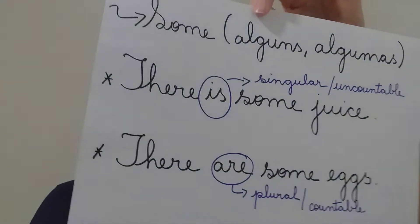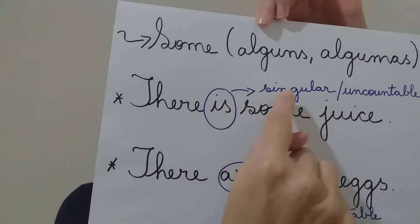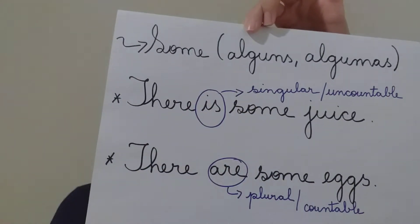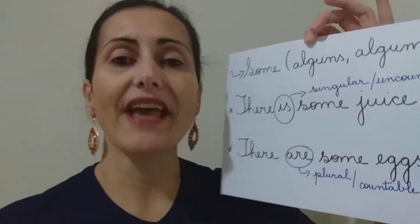Some — alguns, algumas. There is some juice, ok? Singular — verbo to be 'is', singular. Uncountable. Uncountable é quando você não consegue contar, ok? Você consegue contar água? Leite? Não. Areia? Não, não é verdade. Uncountable.